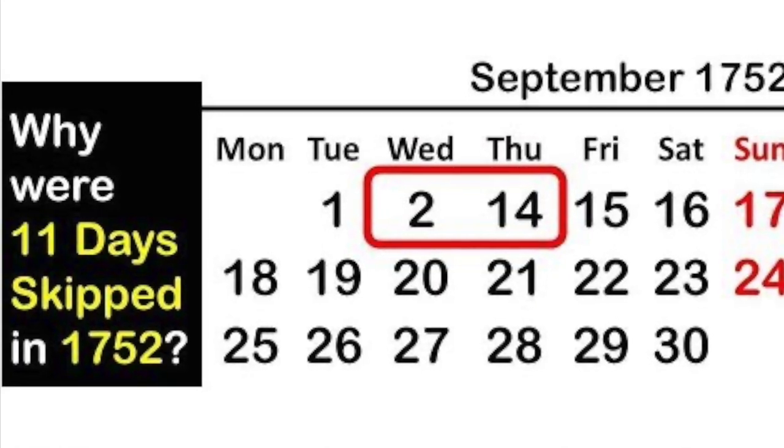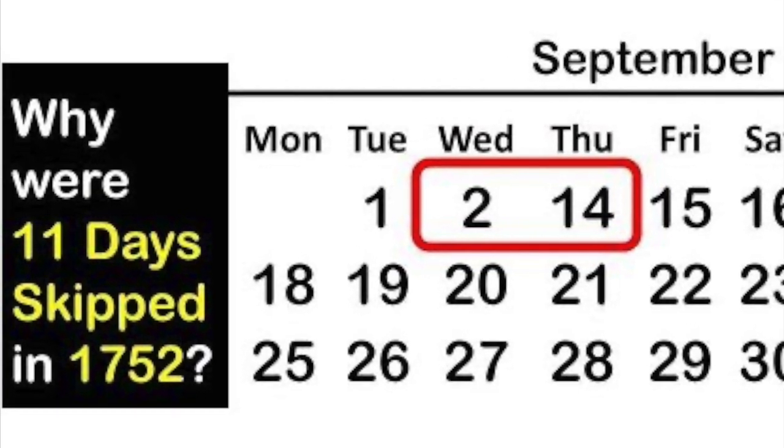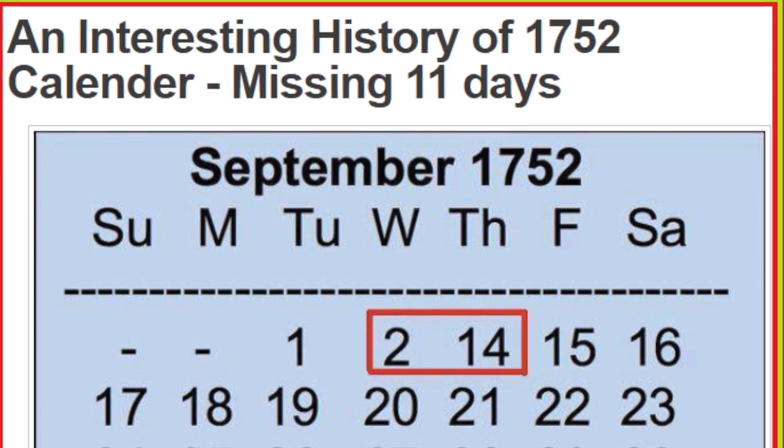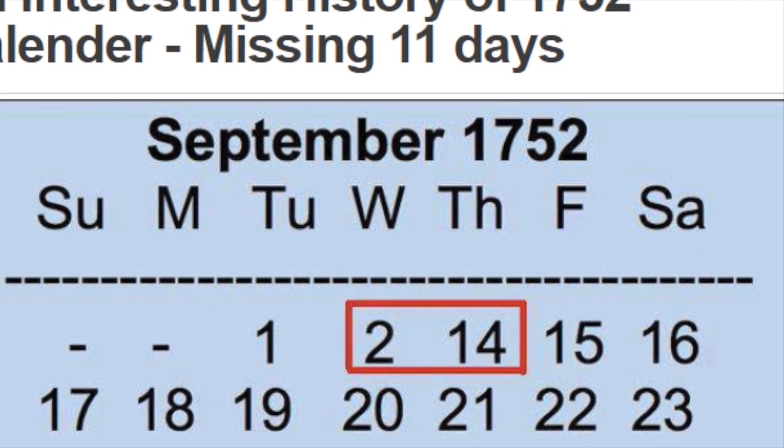Did you know that in the Gregorian calendar, there was a time when about 11 odd days were just chopped off? In 1752, after September 3rd, the calendar jumped directly to September 14th — those days had to be taken away to correct it. If you check on Google, you will still find that these dates in 1752 are missing from the calendar because they were removed. That was when England adopted the Gregorian calendar.